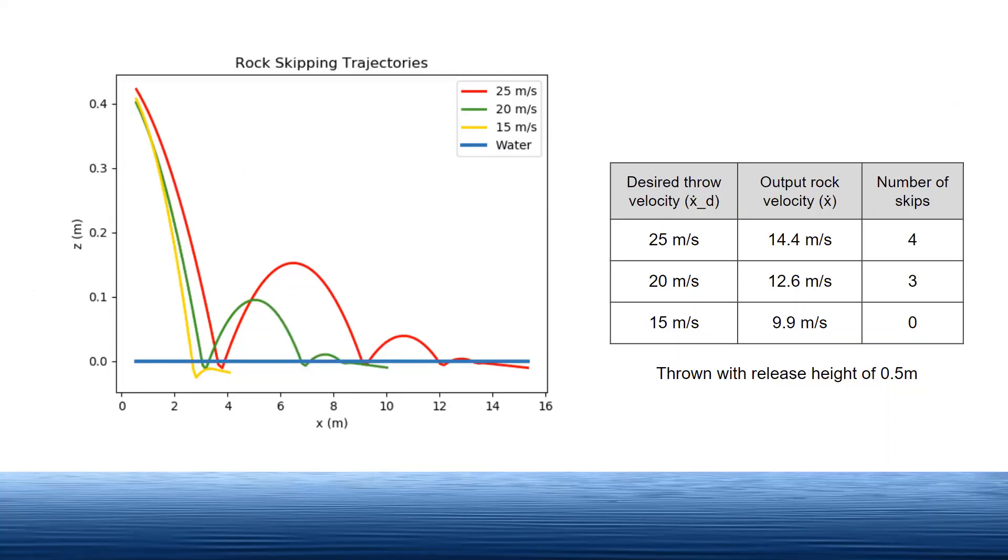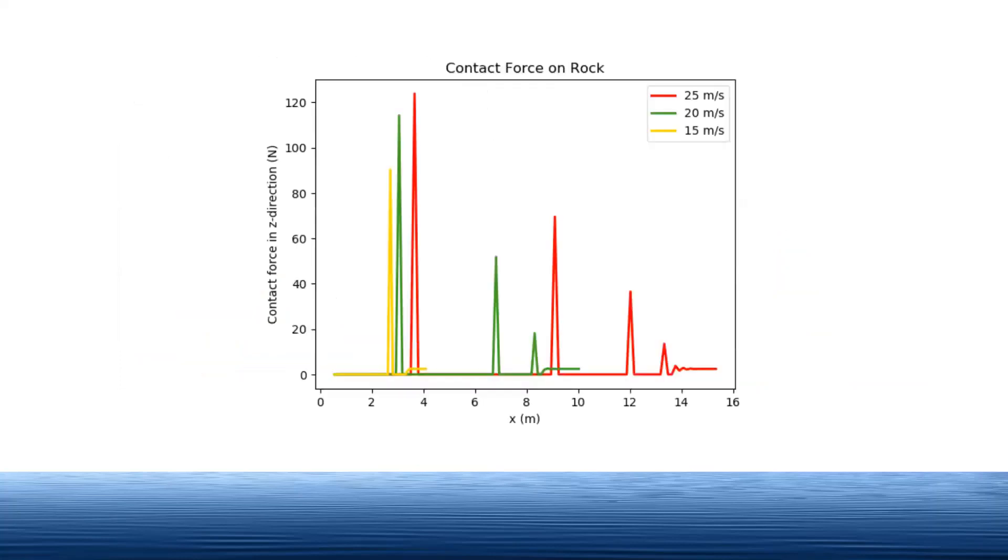We just used the two finger gripper which is not necessarily optimal for skipping a rock. However, we still did get the rock to skip and saw that higher velocities led to more skips. We can also see the contact force decreases with each impact.